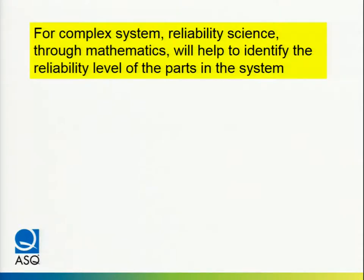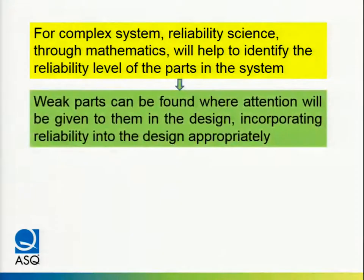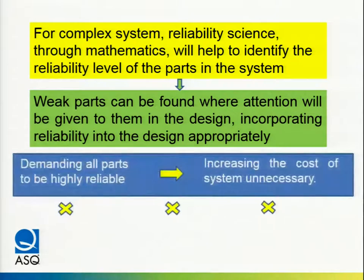For a complex system, reliability science through reliability mathematics allows us to identify which parts in the system are more important in terms of reliability, and what reliability requirements each component should meet so that the entire system will be good. We can identify which parts deserve more attention in design and component selection. We do not need all parts to be highly reliable — that would be costly. Only the critical parts need to be highly reliable; the rest may not need to be, so we don't increase the cost of the system unnecessarily.